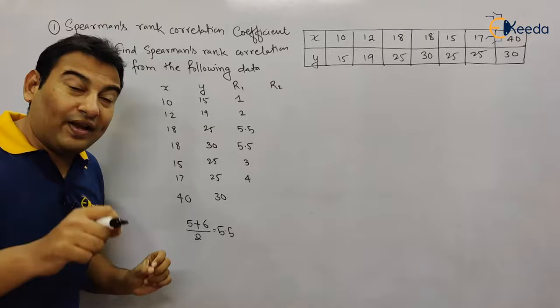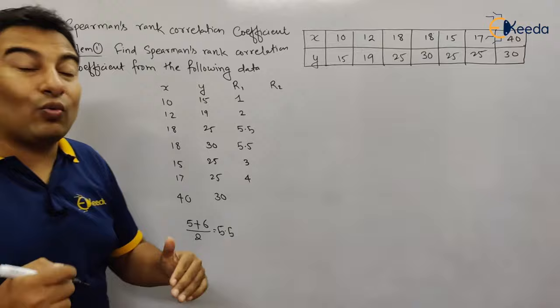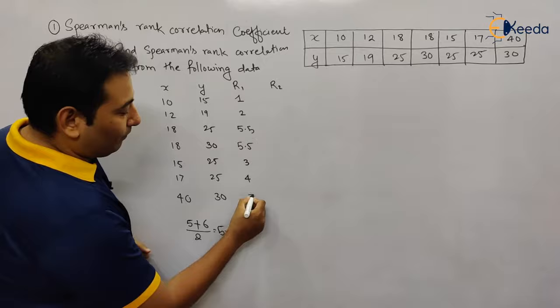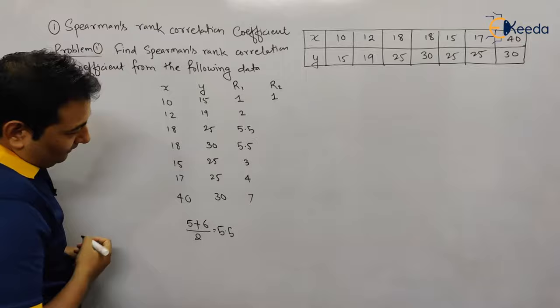Now for R2, ranking the Y values in ascending order. The smallest is 15, so rank 1. Next, 19 gets rank 2. Then we encounter 25, which would be rank 3, but 25 is repeated — in fact, it appears three times.